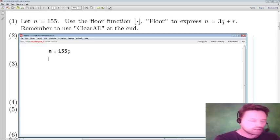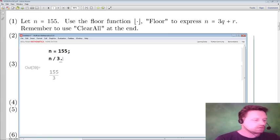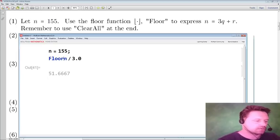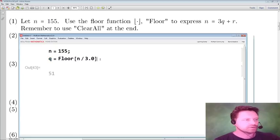So I've got n and now I want to divide n by 3. I see that's a fraction, that's not quite what I want, so change this to 3.0 and now I have a decimal number. I'm looking for the number 51 that we see here, and the floor function will give me just that - it cuts off the decimal part of the number. That's going to be the quotient q in this problem.